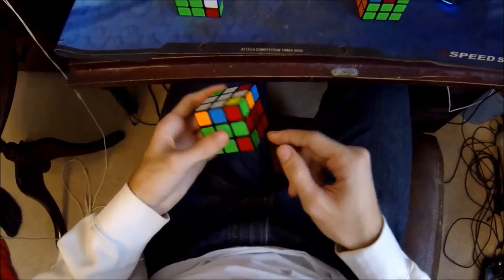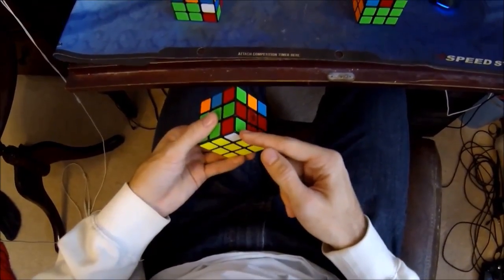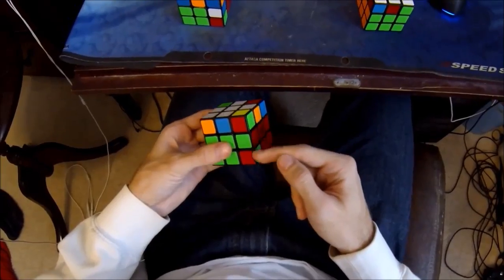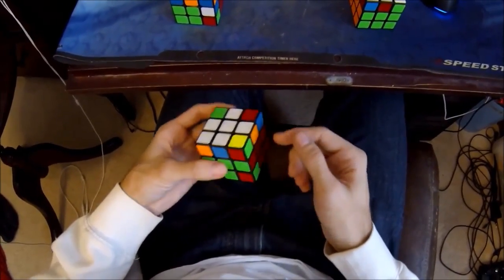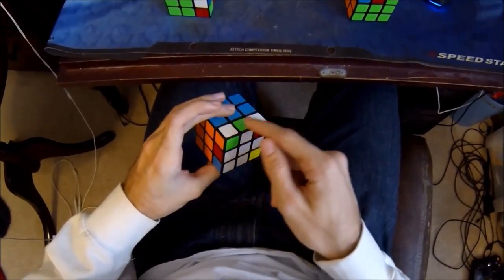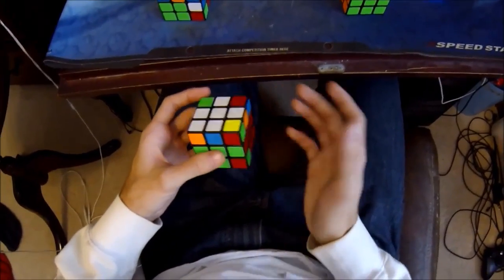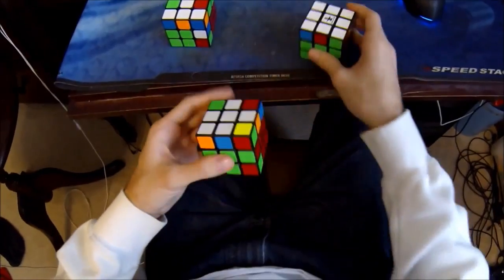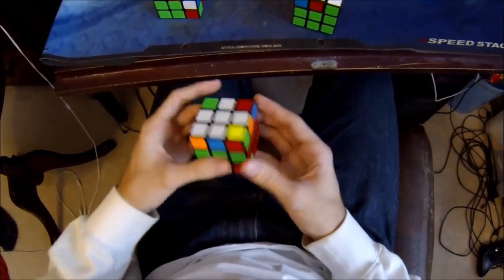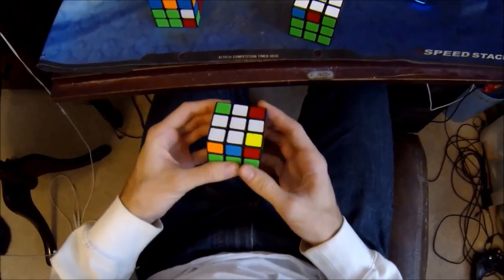The second and final step is to position the corner into the last slot while orienting the remaining corners in the last layer, thus producing an OLL skip like this. This case is known as CLS and there are 104 cases for this step.